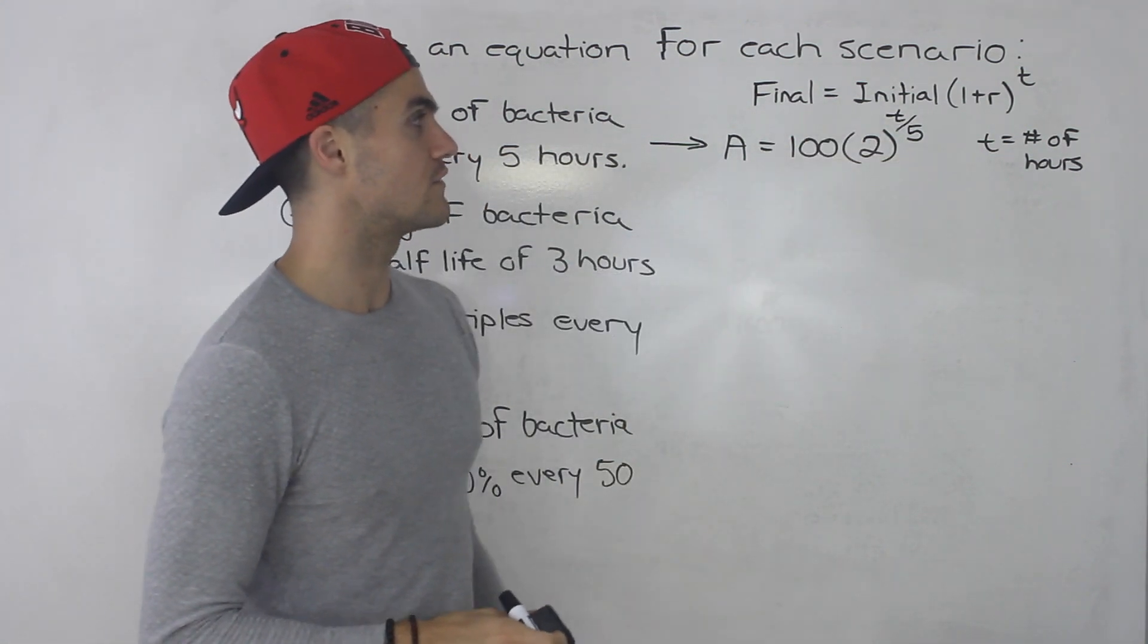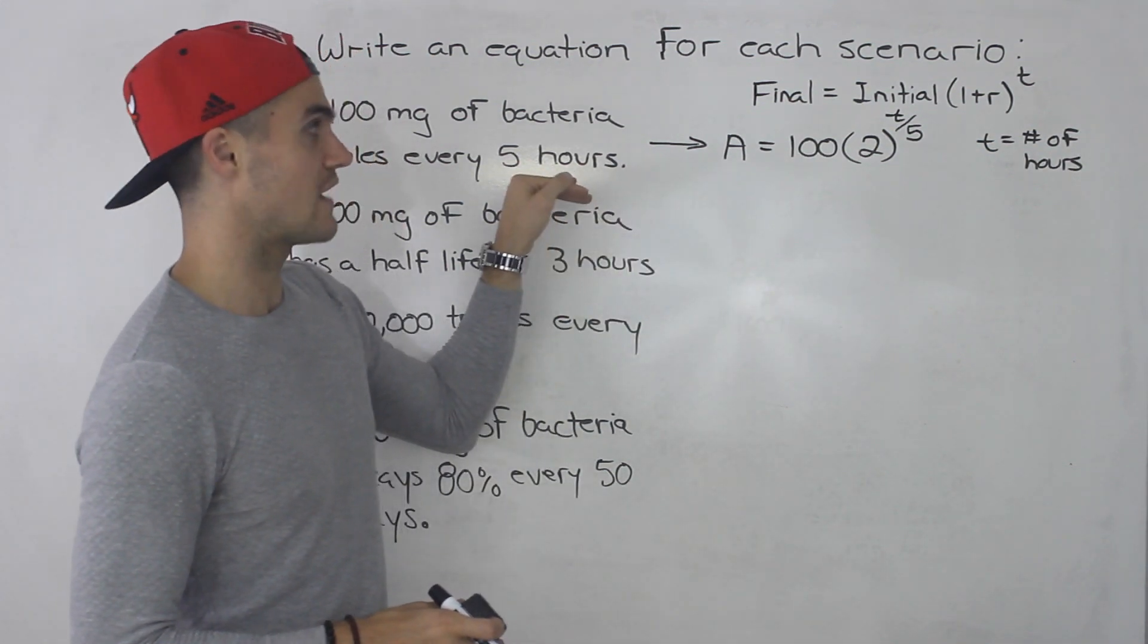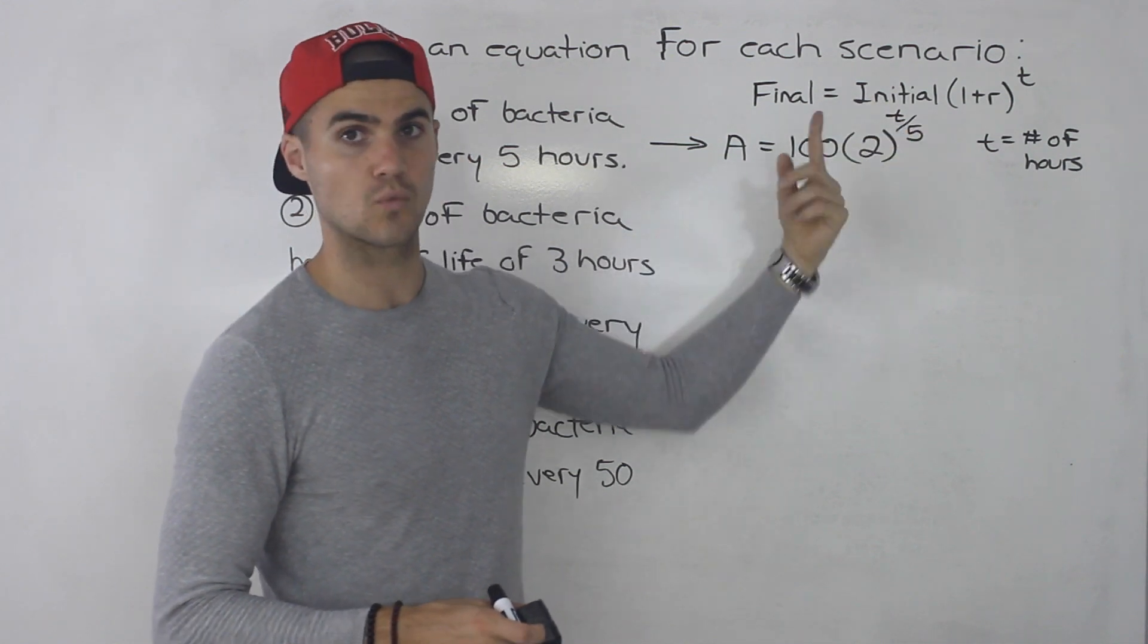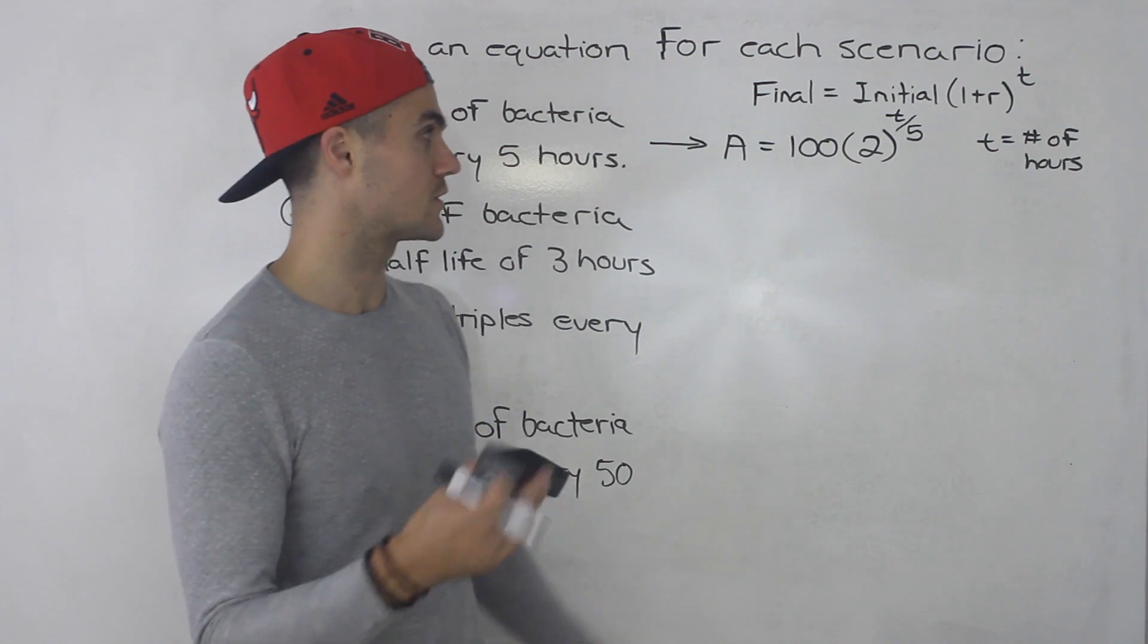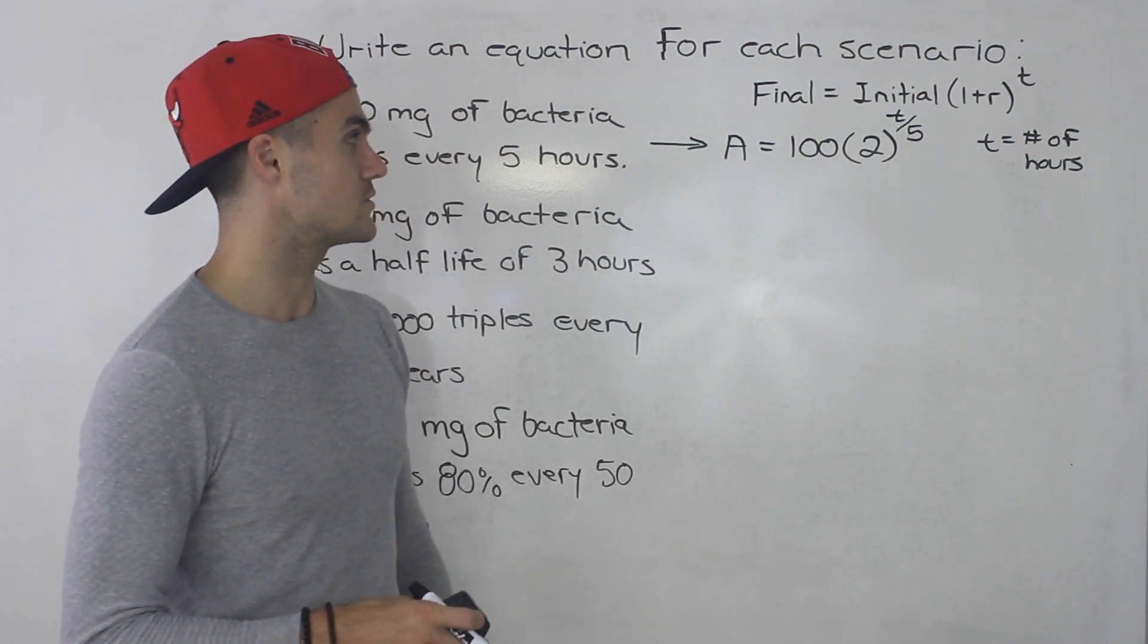So it'd be t over five, meaning that once you get to five hours, for example, the t value would be five. So five over five is one, and then two to the power of one is just two. So we're doubling that 100 by multiplying it by two to get 200.